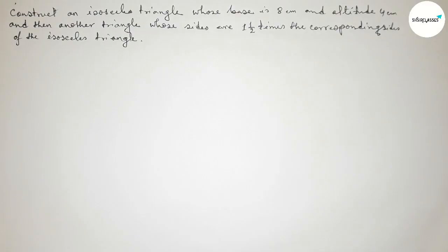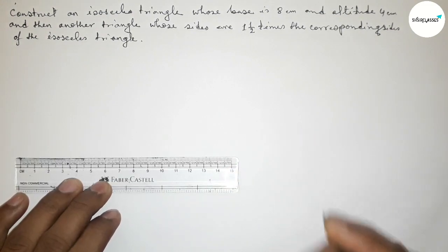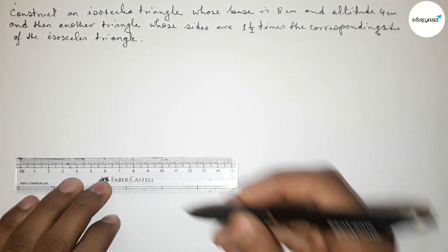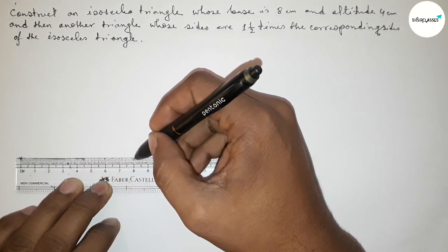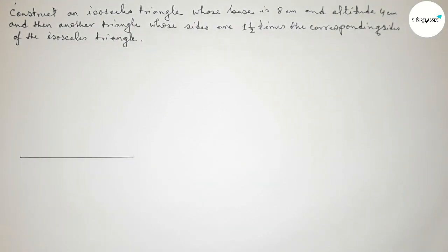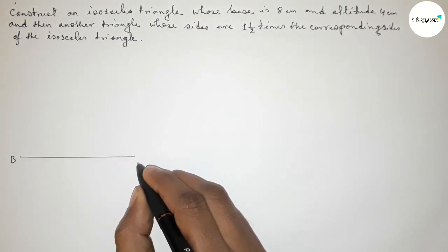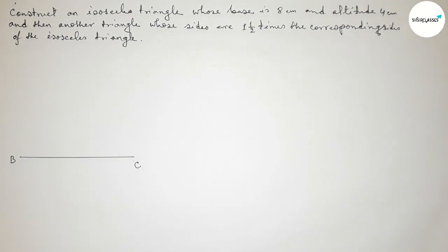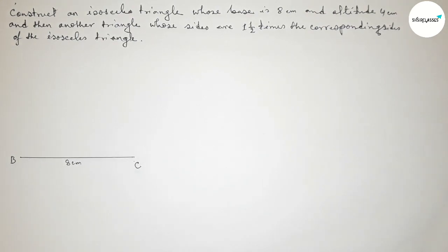First of all, with the help of a scale, drawing the given base of 8 centimeters: 0, 1, 2, 3, 4, 5, 6, 7, 8. So this is an 8 centimeter line segment. Taking point B here and point C here, so BC equals 8 centimeters.